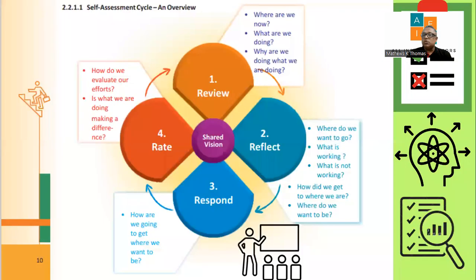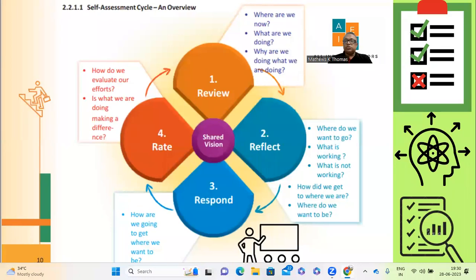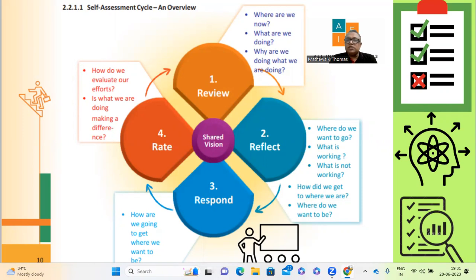In the self-assessment there are four processes. The first is review — what is our current status? Where are we standing — are we average, good, very good, or excellent? What are the things we are doing right, what is going wrong, what can be improved? The team formed as per protocol will conduct this review.